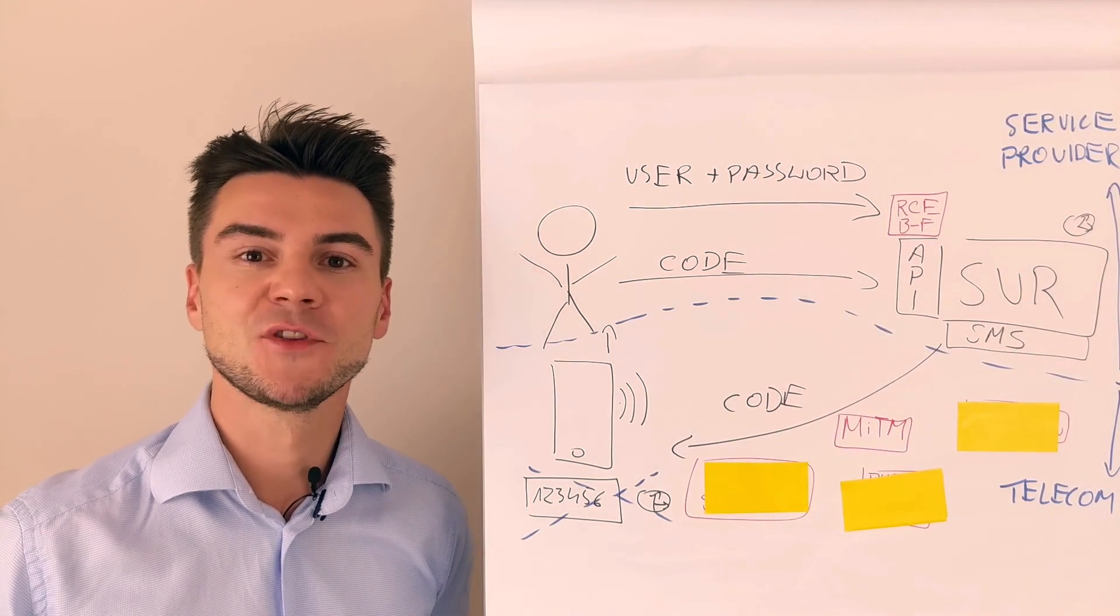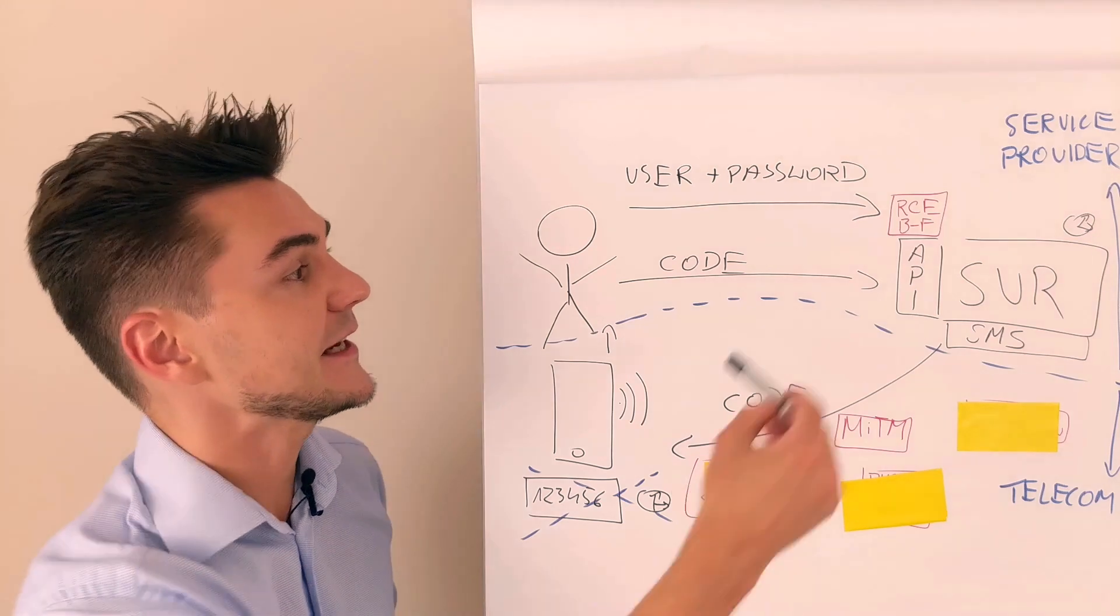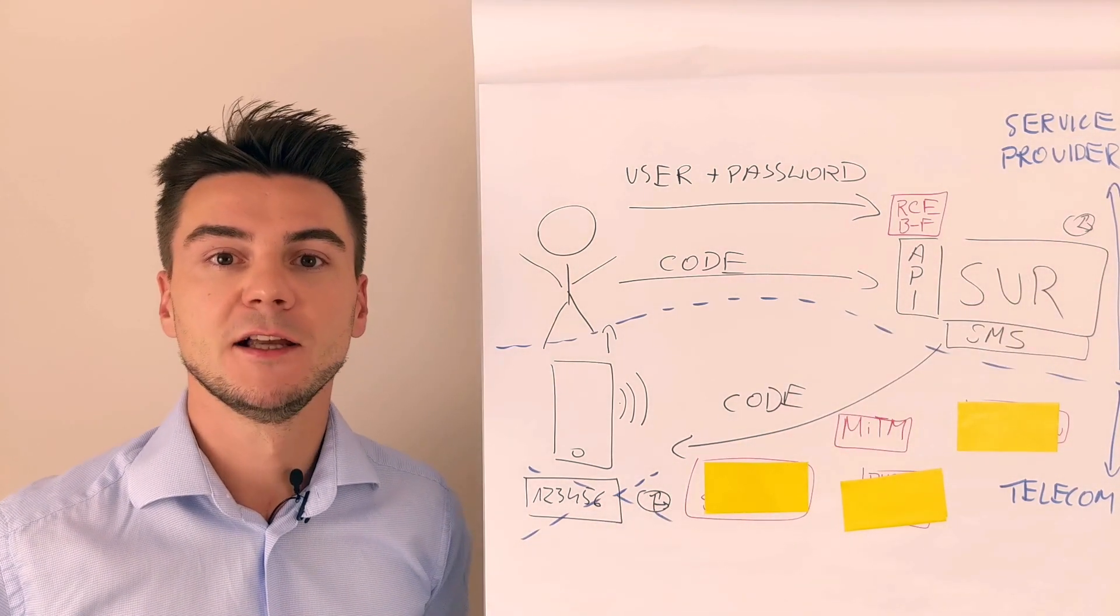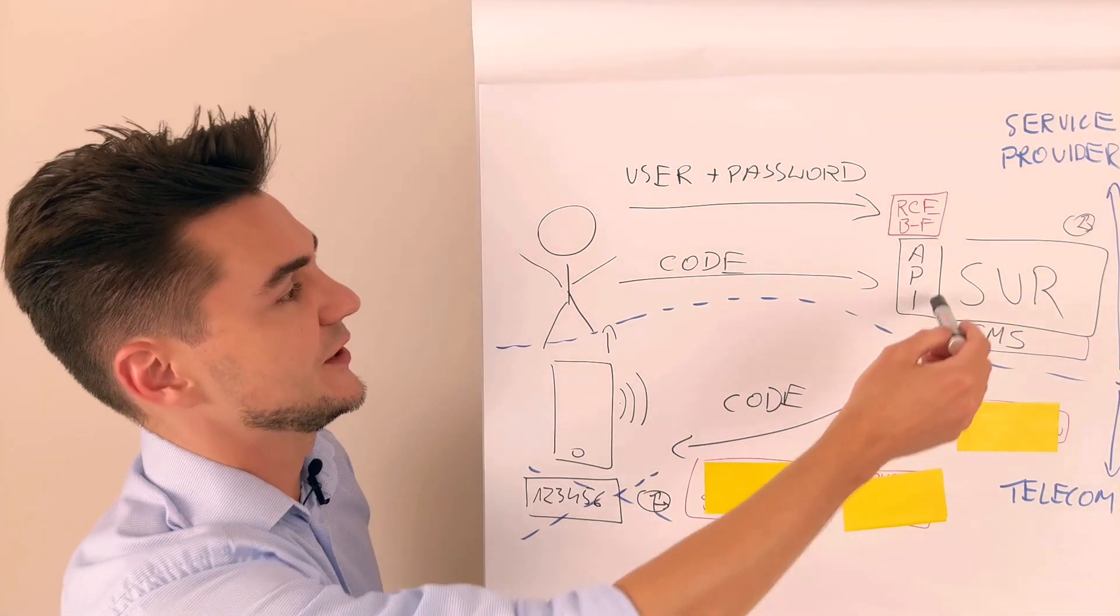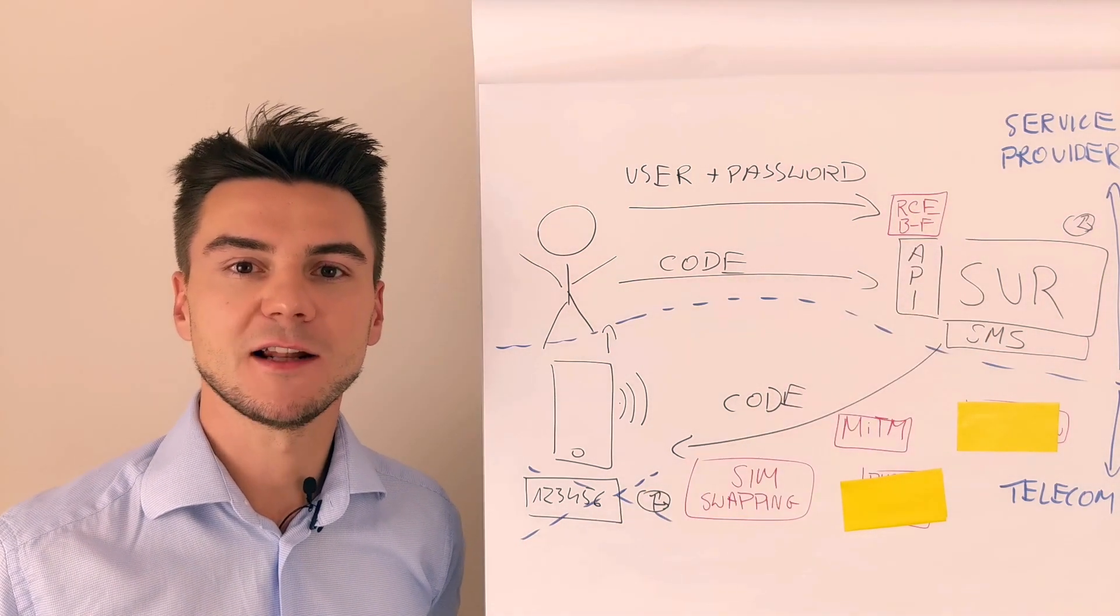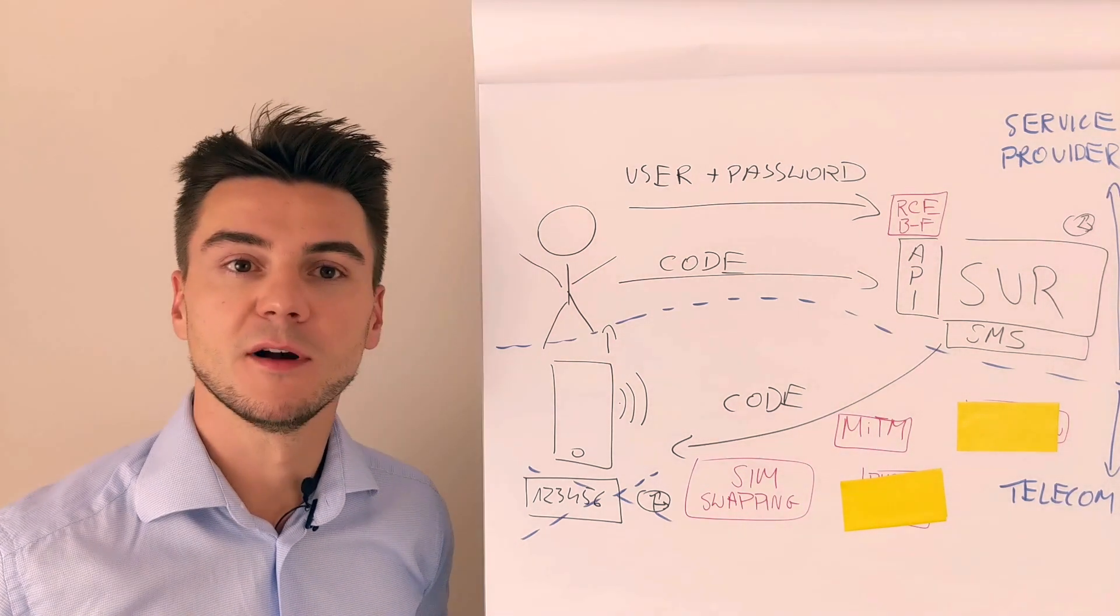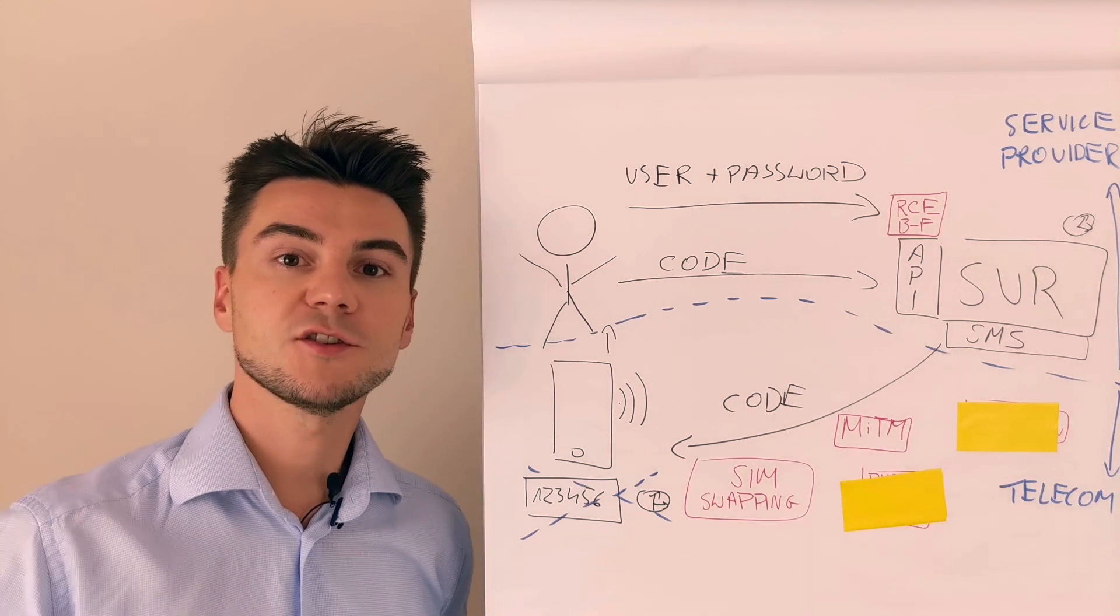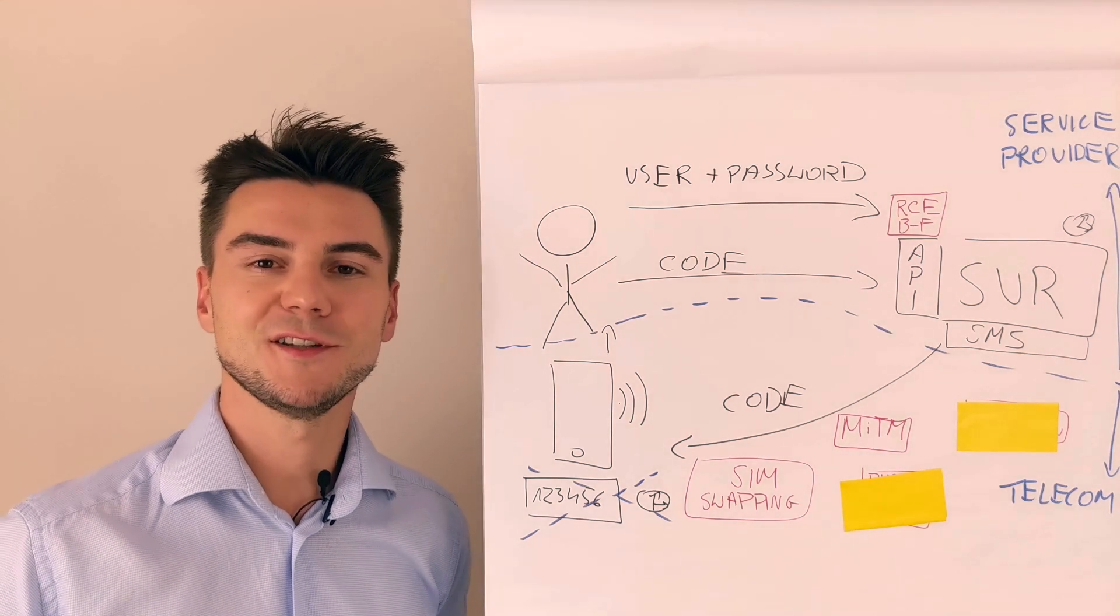Now the best threat is here. No matter how effective the detection mechanisms are on the server provider side or how secure is the server API, the attacker reaches out to the telco provider of the victim's phone number and the attacker says, 'Hey, I am John Doe. I just lost my phone and I need a new SIM card.'